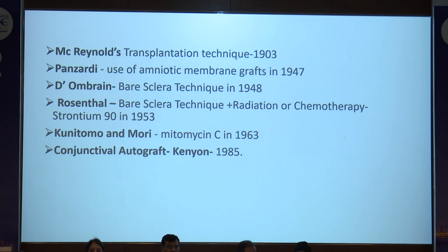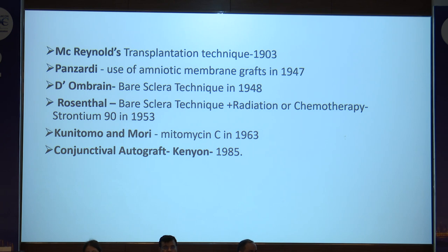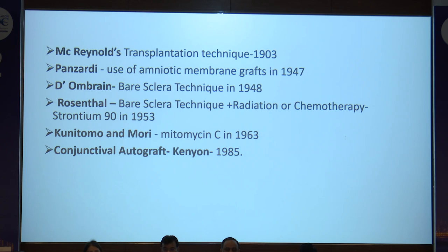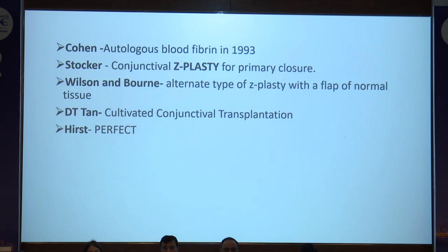Coming next to further techniques: McReynolds' transplantation technique in 1903; Panuzzi propagated the use of amniotic membrane grafts in 1947; then came the bare scleral technique in 1948, popularized by D'Ombrain; the combination of bare scleral technique with radiation or chemotherapy in 1953; Kunomoto and Mori started with mitomycin C in 1963; and Kenyon started conjunctival autograft in 1985. Further, blood fibrin autologous transplantation in 1993; Stalker gave a Z-plasty followed by an alternative by Wilson and Bonn; then came the D-Tan cultivated conjunctival transplantation and the PERFECT technique.